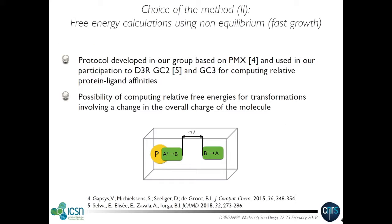The second option is based on a method we developed for predicting relative protein-ligand binding affinities using non-equilibrium free energy calculations. We used this method in the D3R Grand Challenge 2 and GC3. One interesting and quite unique aspect of our method in GC2 was the ability to calculate relative free energies for ligand transformations that involve a change in the charge of the molecule, which was quite challenging.